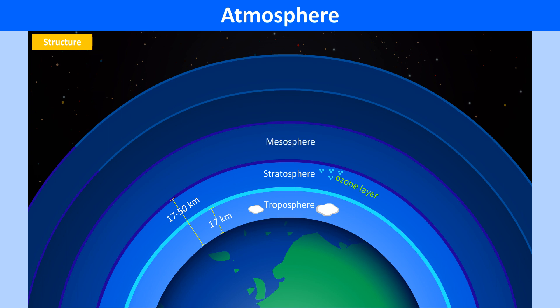The mesosphere, the third layer, sees a decrease in temperature with an increase in altitude. Ice crystal clouds are found here. It extends from the stratosphere to around 80 km above sea level. The thermosphere is a very hot layer where the temperature of the gases is extremely high. The exosphere is the outermost limit of our atmosphere, where the atmosphere merges into space.